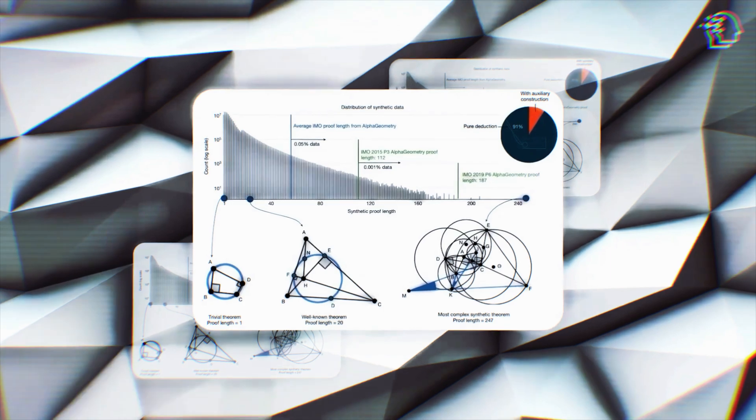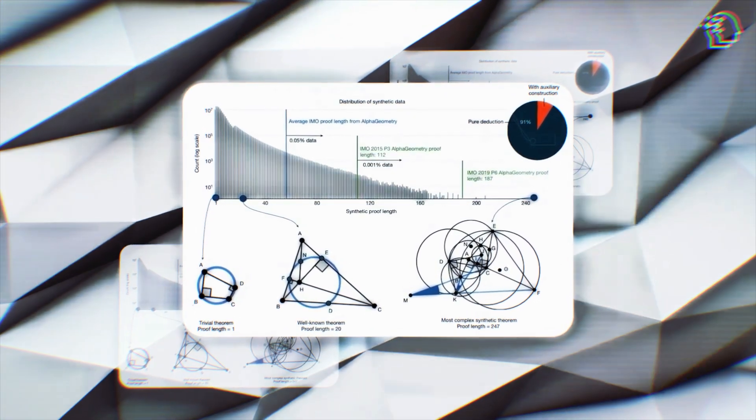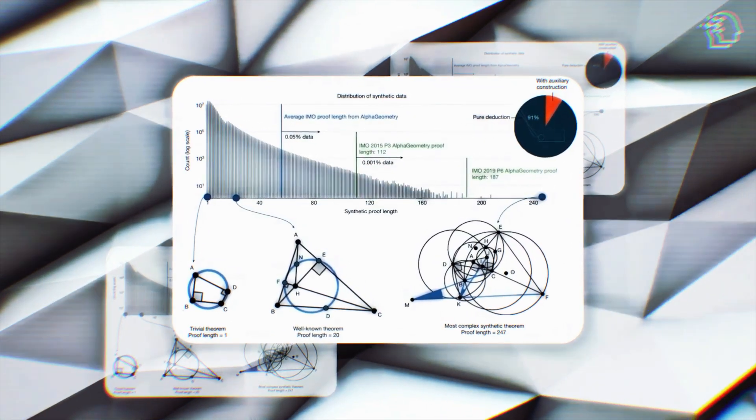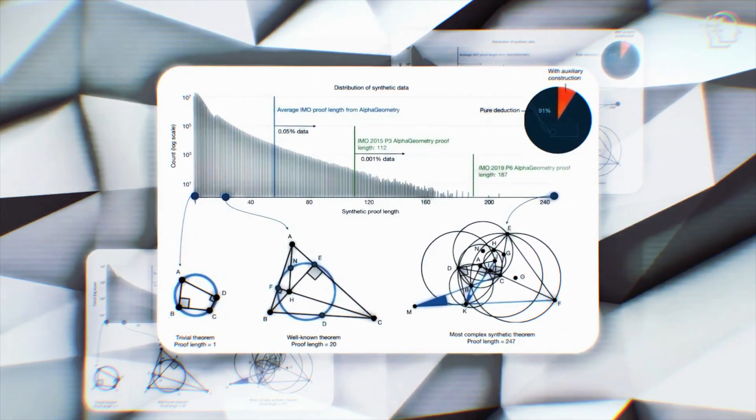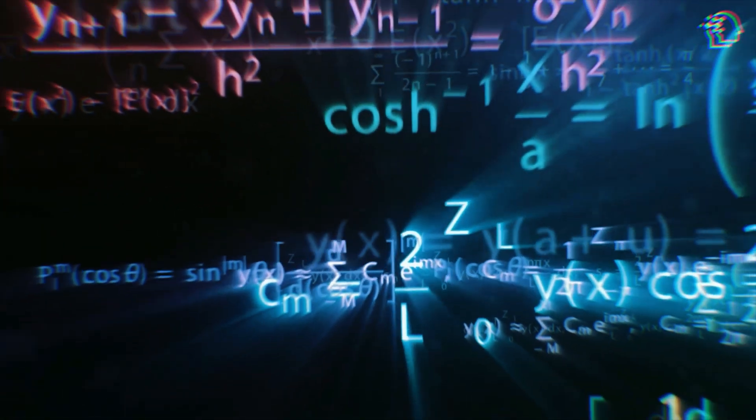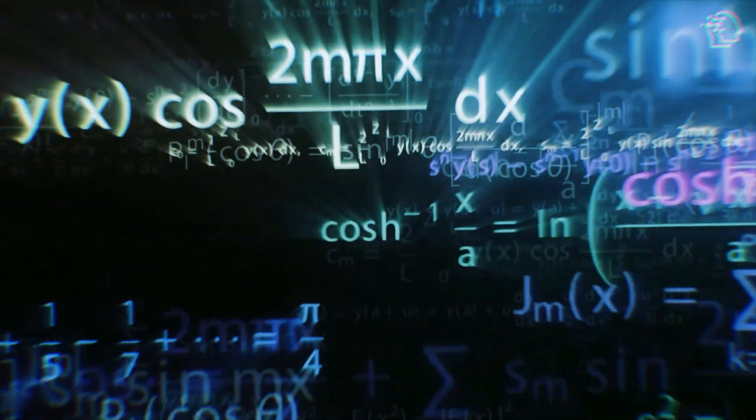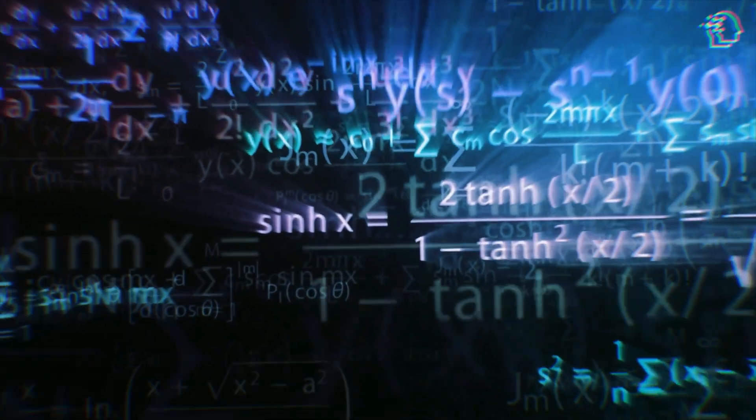While AlphaGeometry's toolkit might be simpler compared to human methods, it represents a significant advancement in AI theorem proving. It illuminates both the immense potential and the current limitations of AI in this field, offering valuable insights for future development.